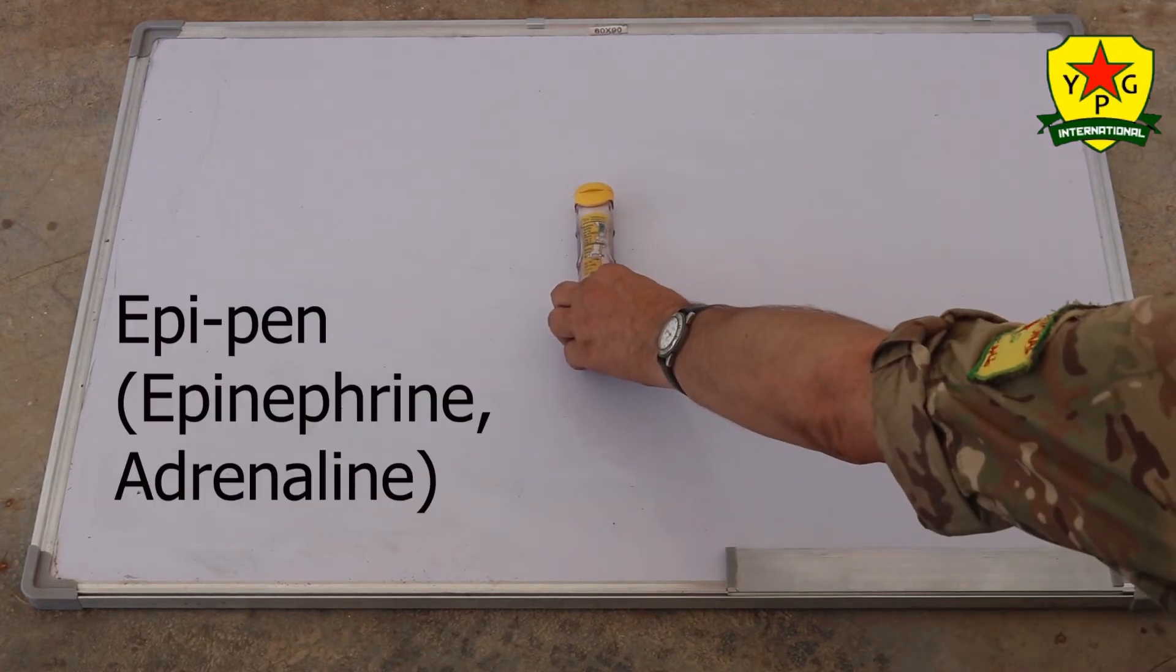The following items are not necessarily for your IFAK, but are very useful for us. First, an epi pen.